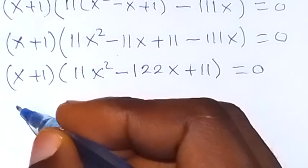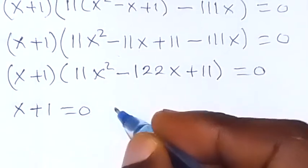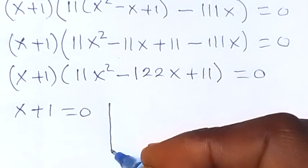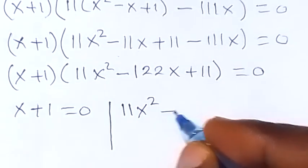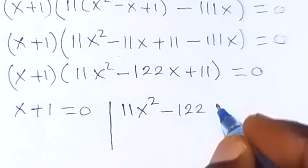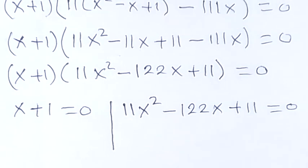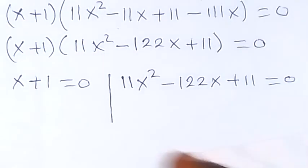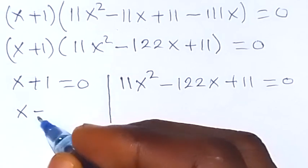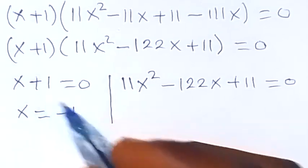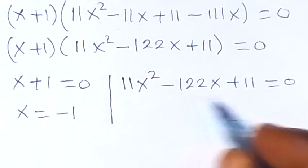We have two possible cases: the first case is x + 1 = 0, and the second case is 11x² − 122x + 11 = 0. From the first case, x equals minus 1. This is the first value of x.